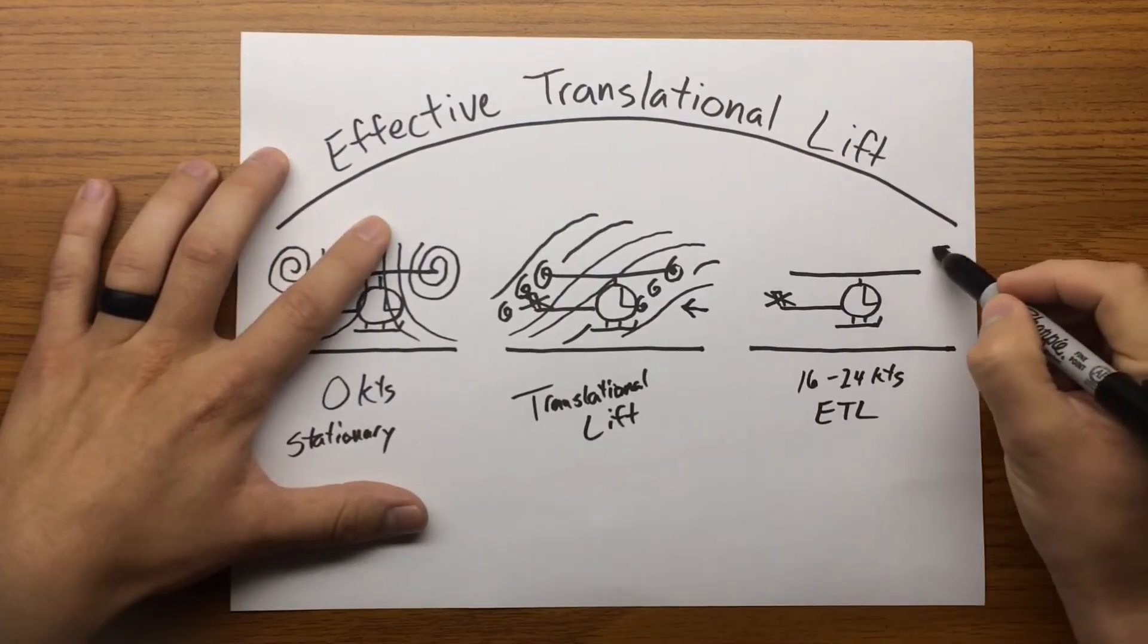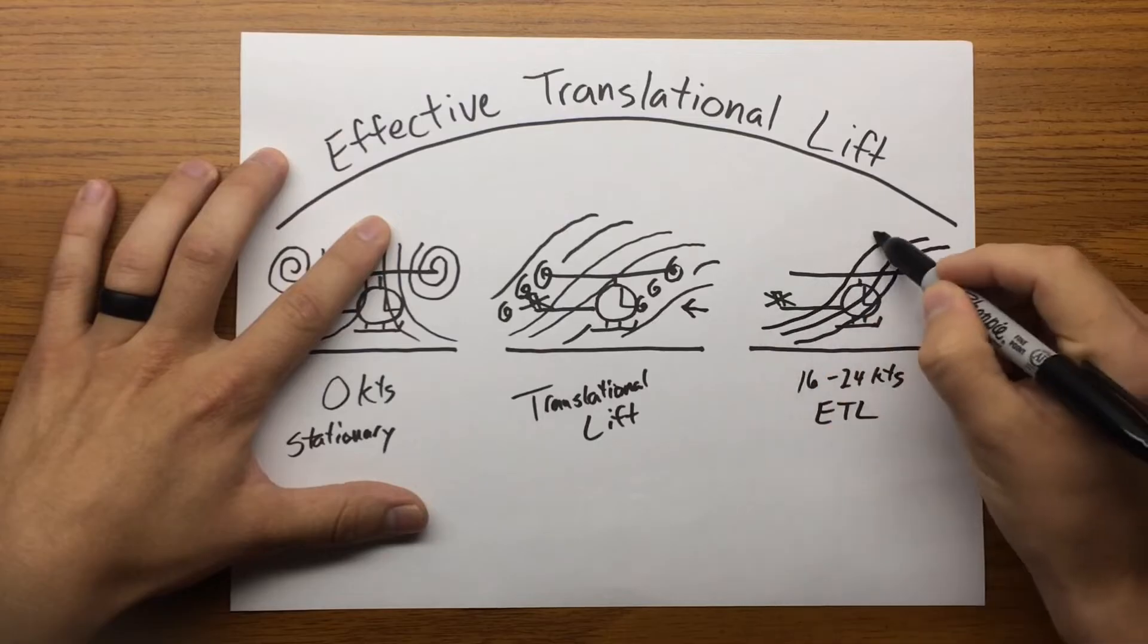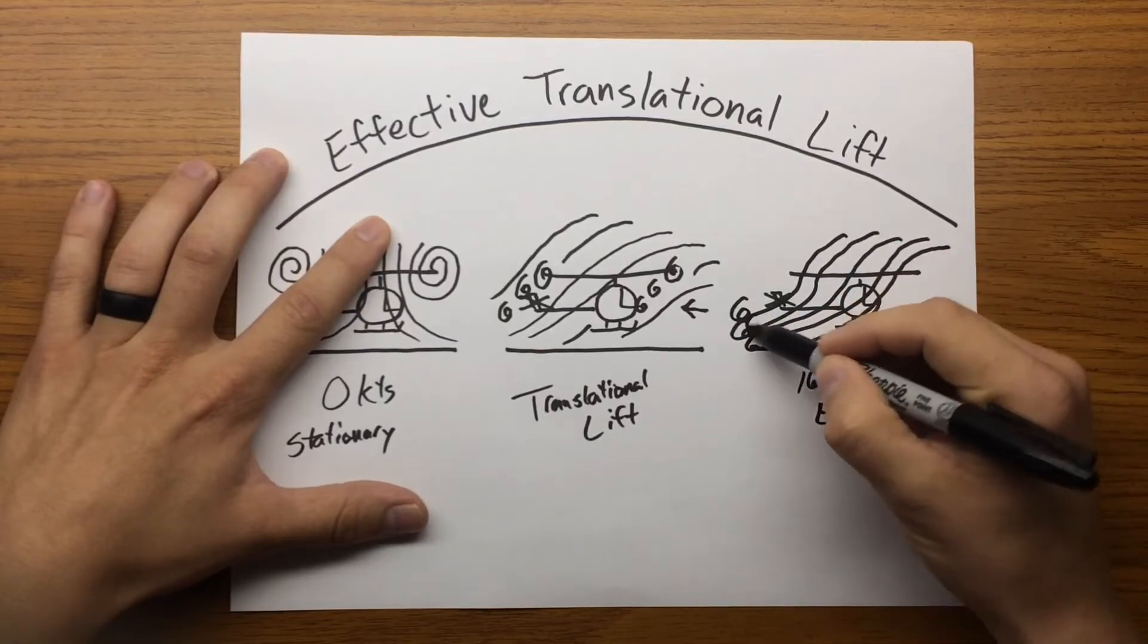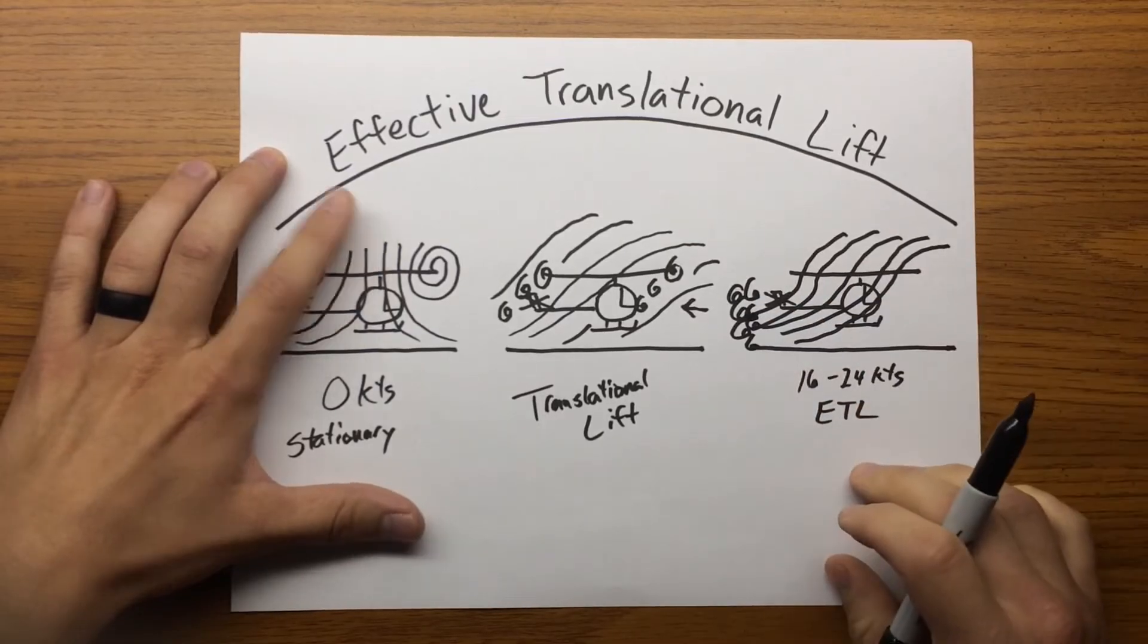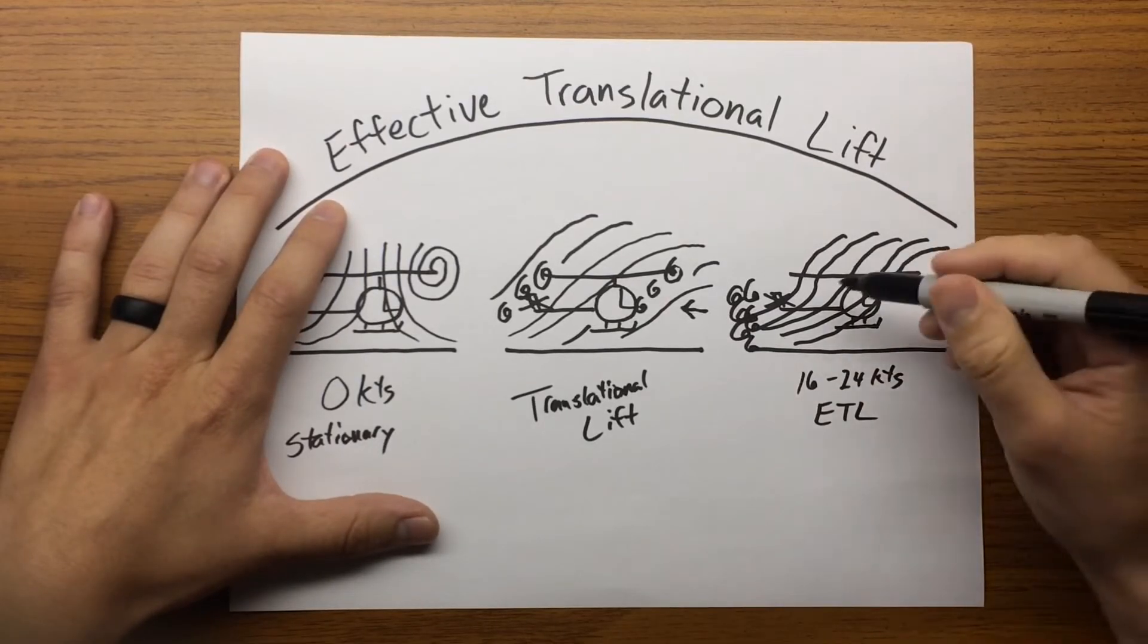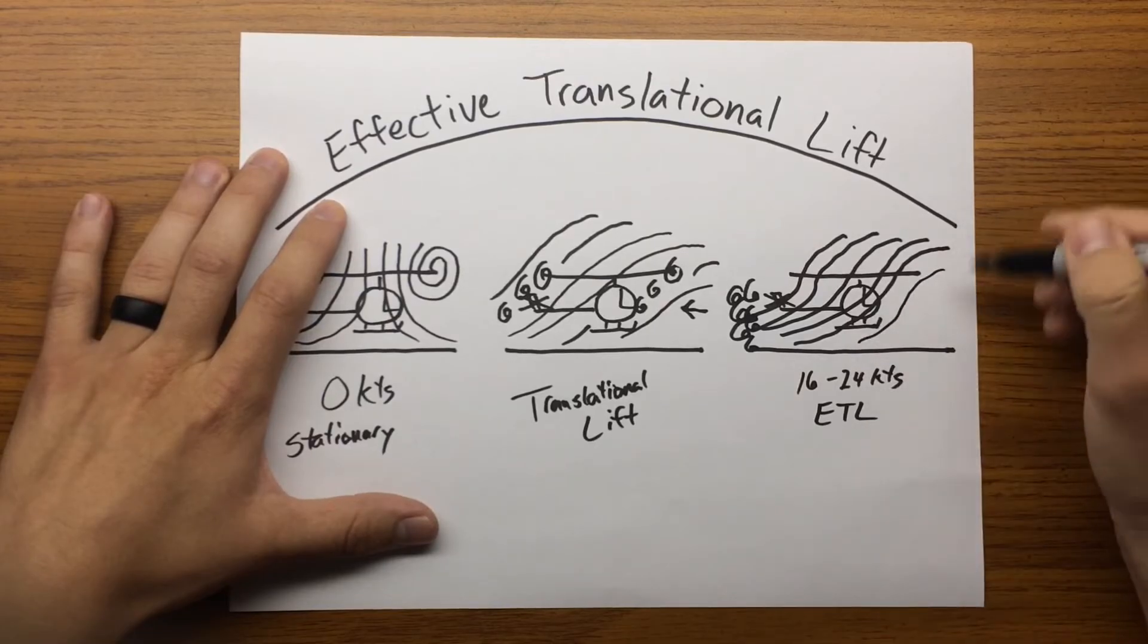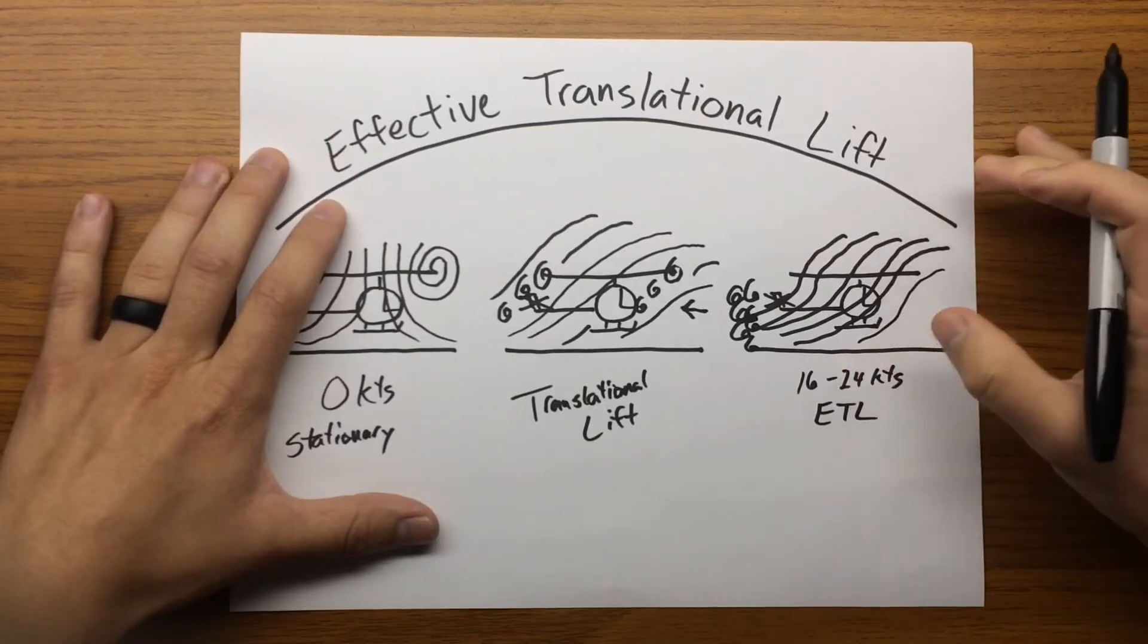Effectively, what it looks like is this airflow is now coming through your rotor system at a rate where the wingtip vortices are all being left behind the rotor system and no longer disturbing the air that's going through the rotor system. As we move forward and get more efficient, it's actually going to improve efficiency all the way up to our best climb, our max rate of climb airspeed, when the total drag is least on the aircraft.